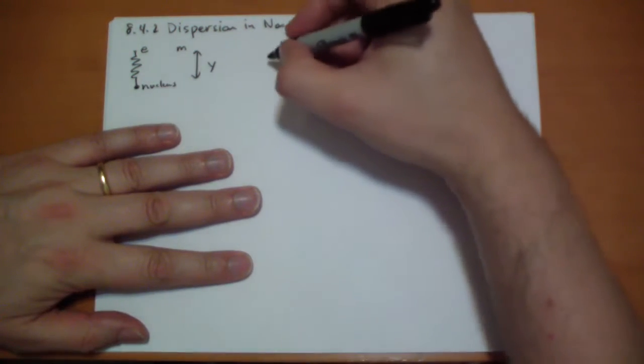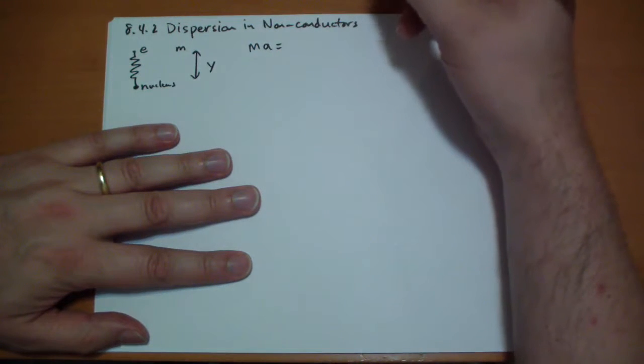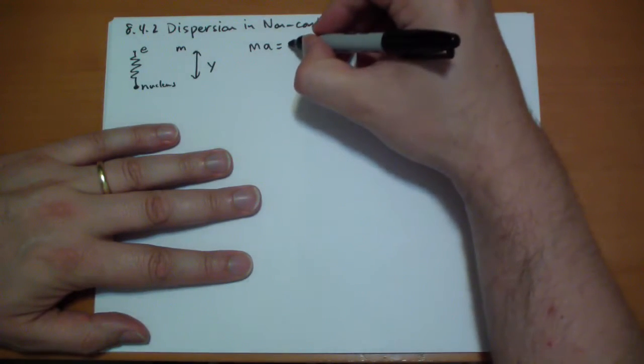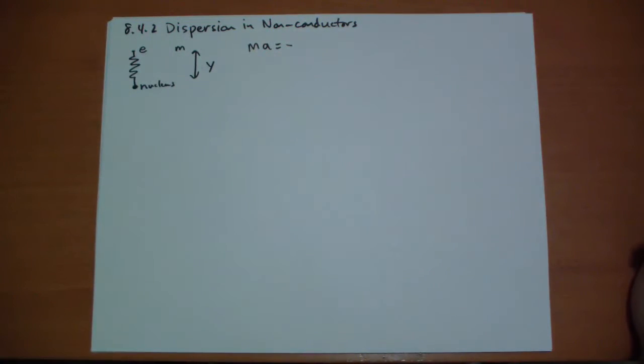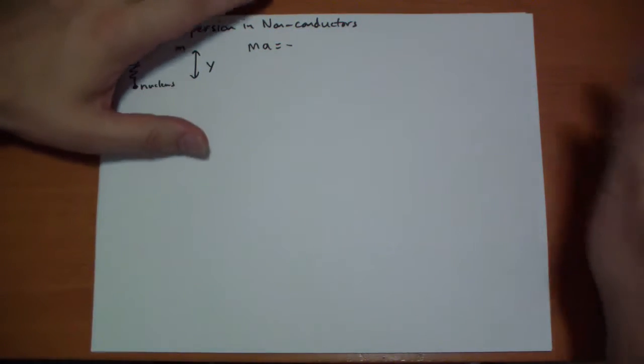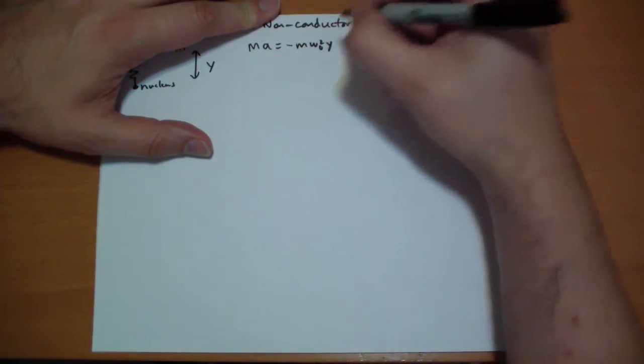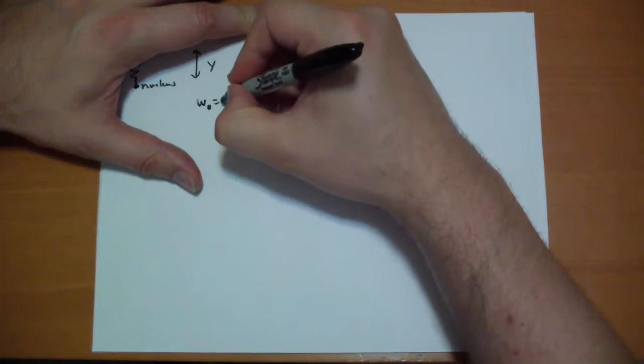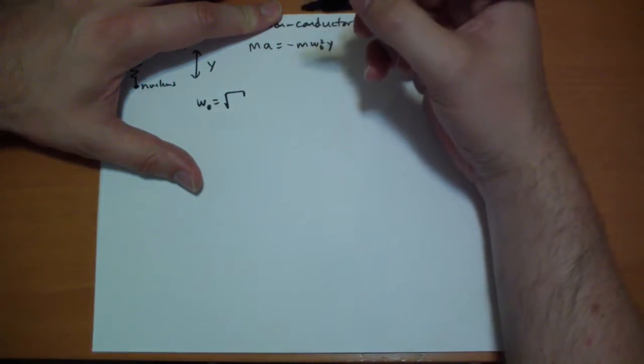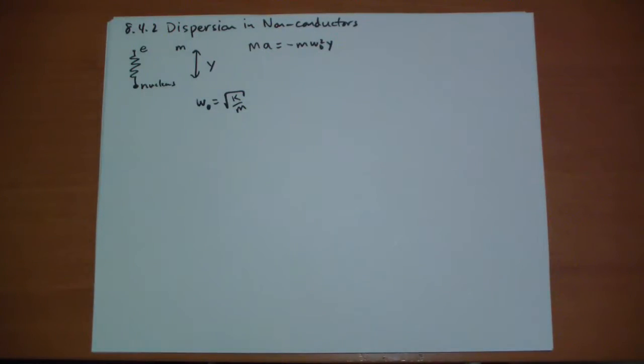The first is the binding force. So the total force, M A is equal to the binding force, which is going to be minus M omega naught squared Y, where omega naught is equal to the square root of K over M. That's the natural resonant frequency of the spring.